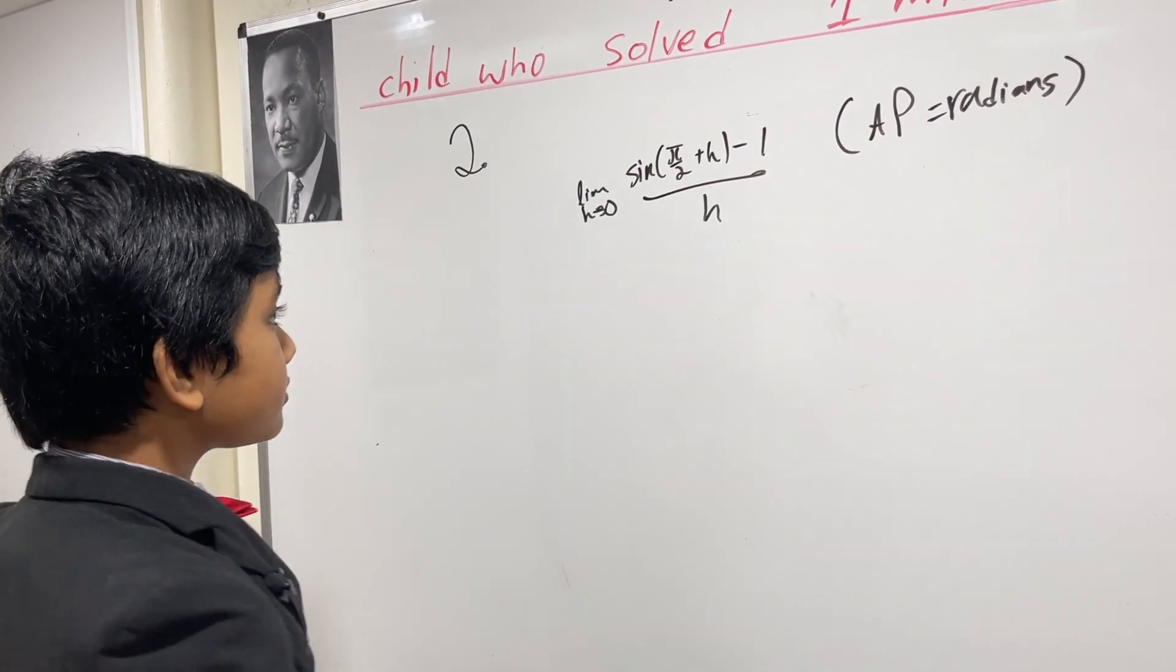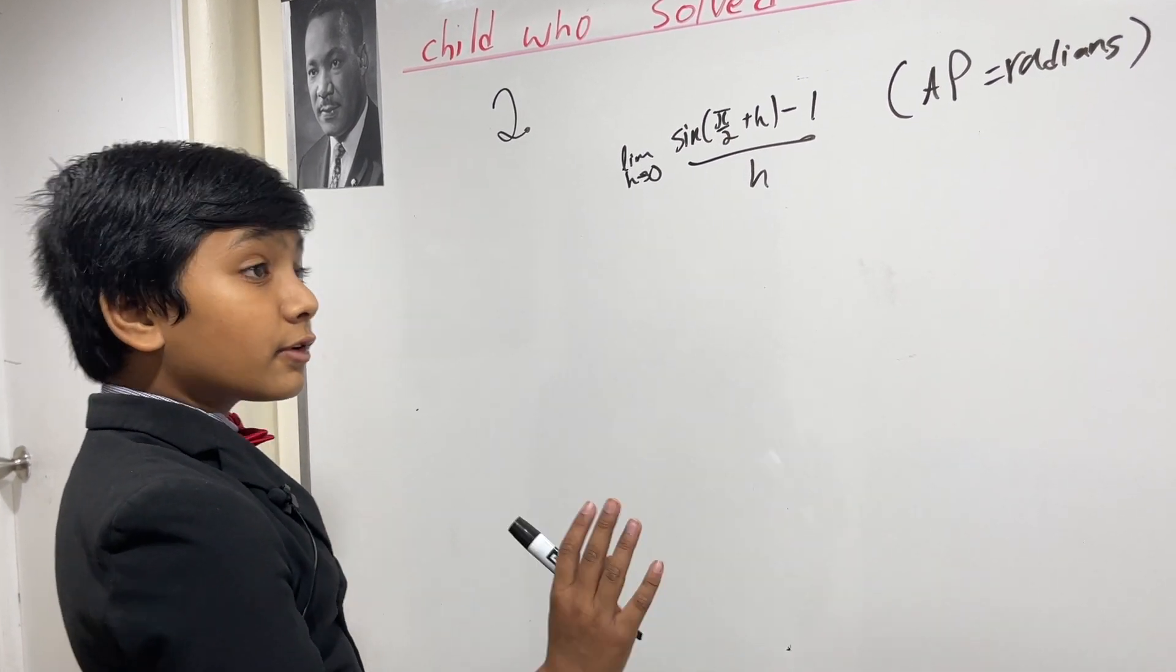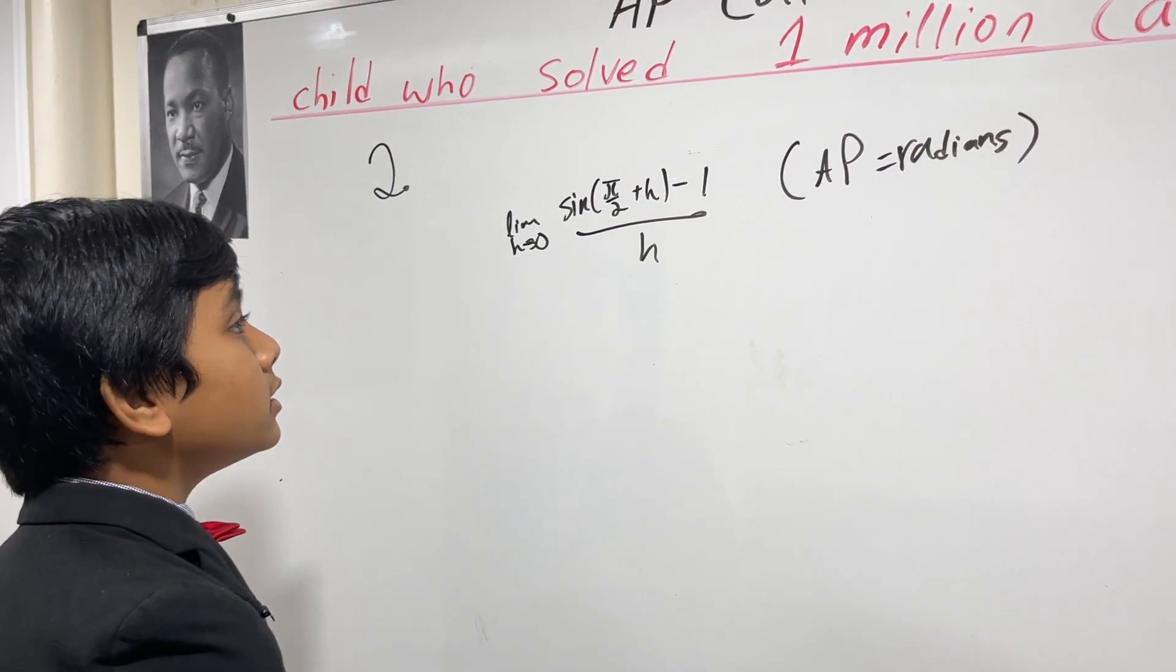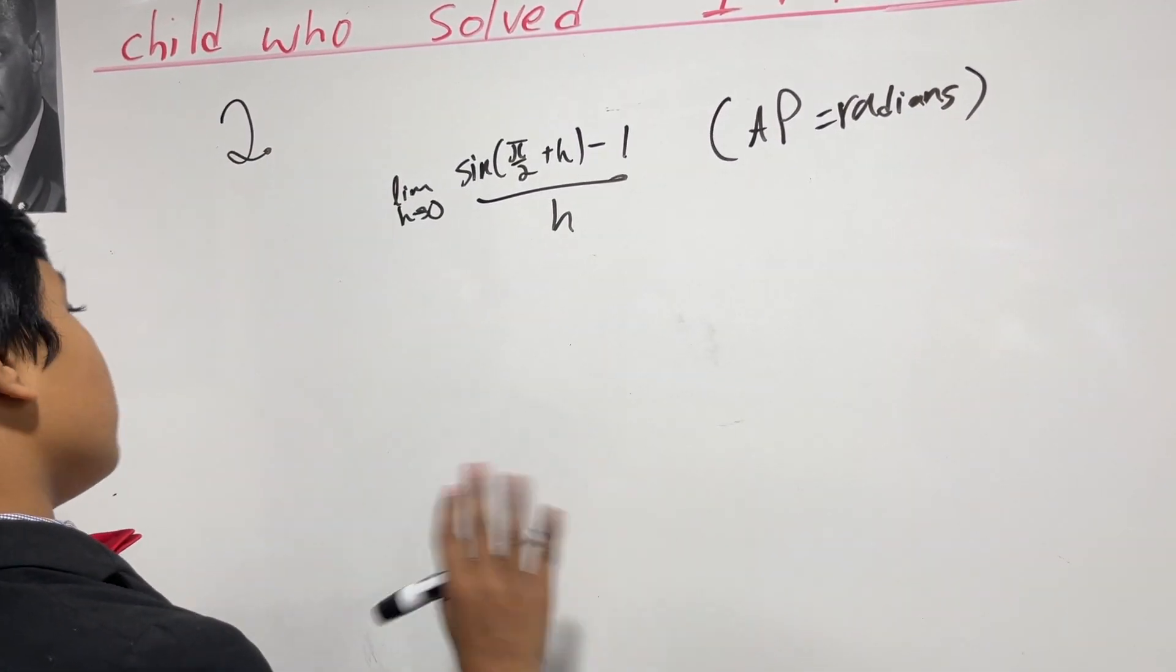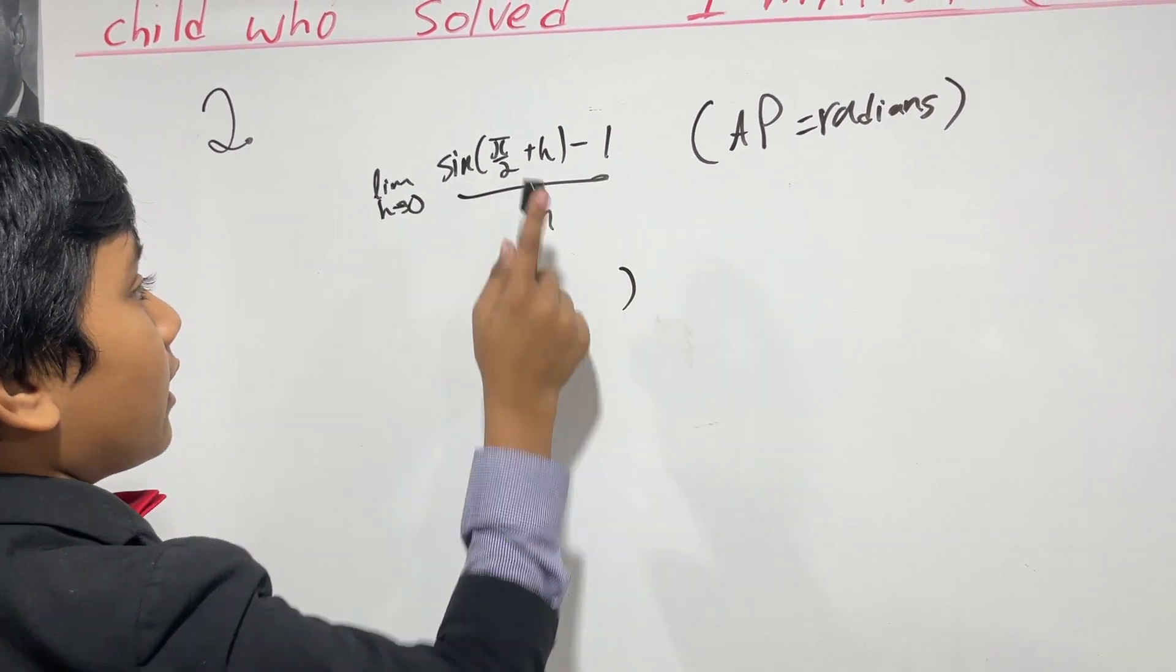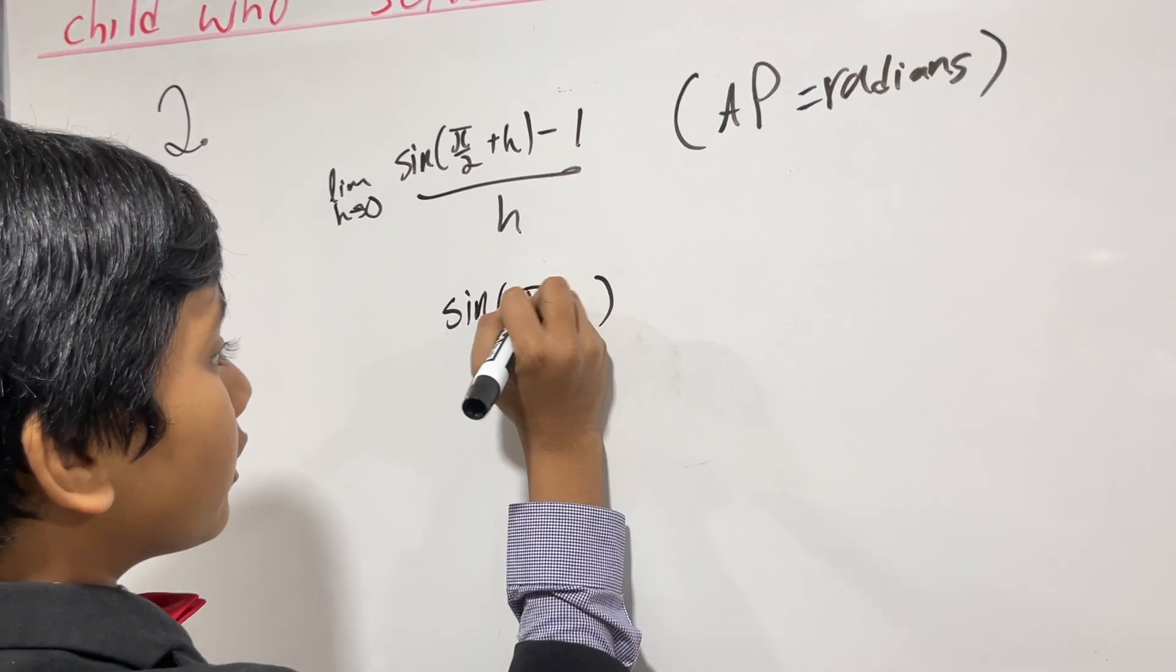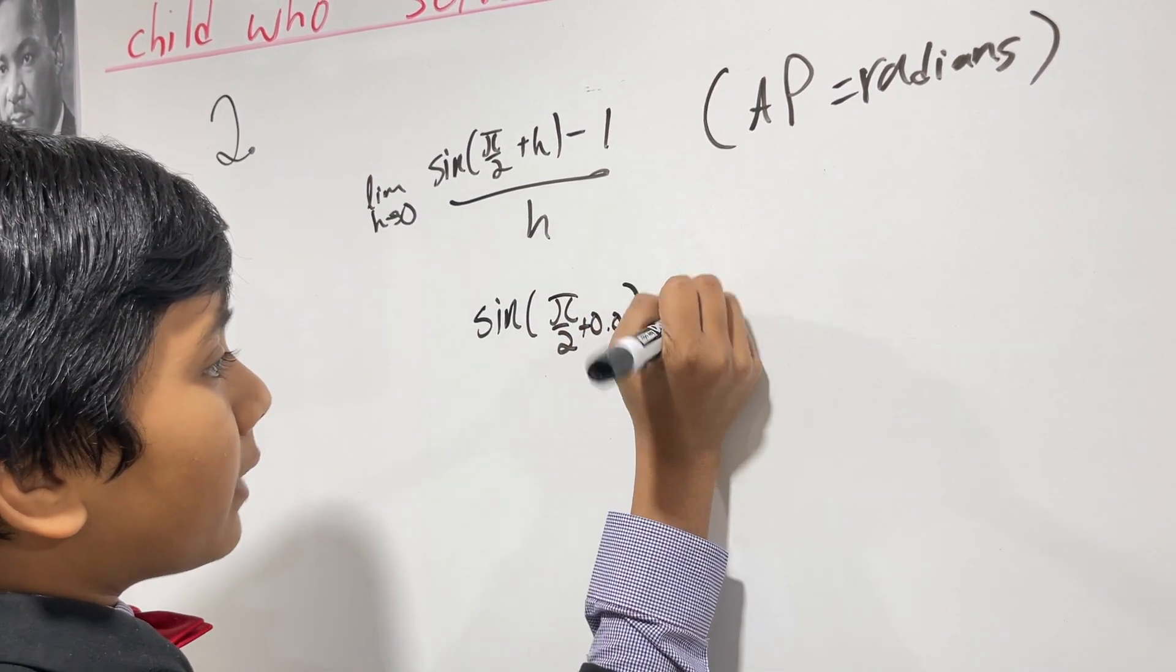So what do we do here? Let's first take the mindset of someone who doesn't see the solution. What they would think is, let's try to approach the limit from the right. Approaching the limit from the right, we get sine of, as h approaches zero, it basically becomes pi over 2 plus a very small amount, and then minus 1.